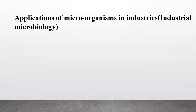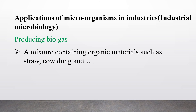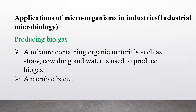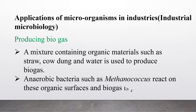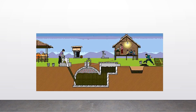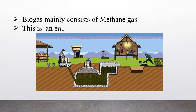Now we are going to learn about the applications of microorganisms in industries — that is, industrial microbiology. The first application is producing biogas. A mixture containing organic materials such as straw, cow dung and water is used to produce biogas. Anaerobic bacteria such as Methanococcus react on these organic substances and biogas is produced. Biogas mainly consists of methane gas and is an energy source we can use for day-to-day work.